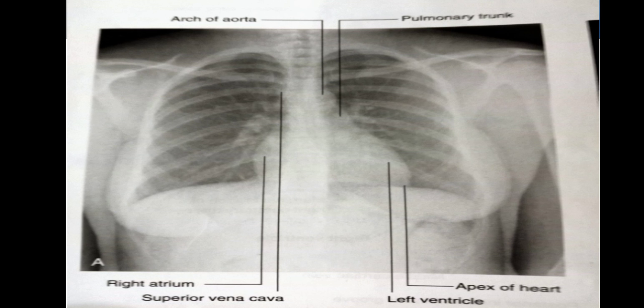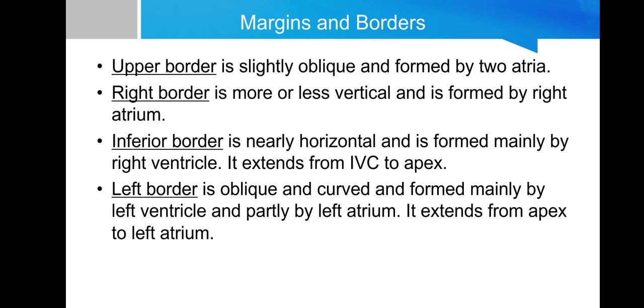In this X-ray presentation, we can clearly see on the right side the labeled right atrium and superior vena cava entering the right part of the heart. On the left side, from the upper part, is labeled the arch of aorta and pulmonary trunk, while at the bottom we can see the apex of the heart and the left ventricle labeled.